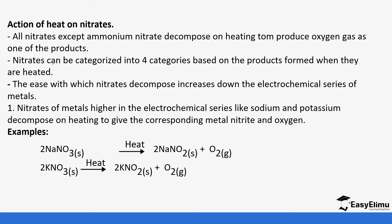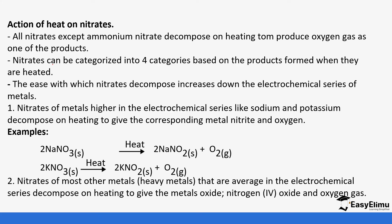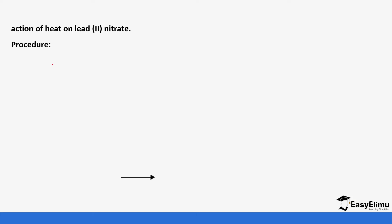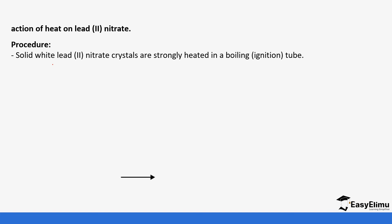The next category includes metals that are average in the electrochemical series — below sodium and potassium. These decompose to give the metal oxide, nitrogen dioxide (NO₂), and oxygen gas.